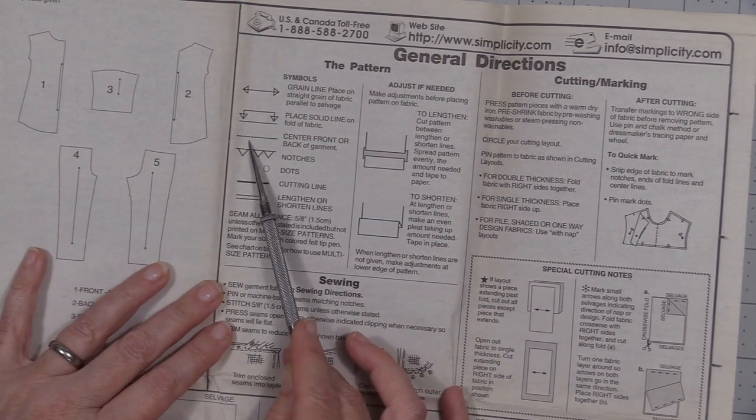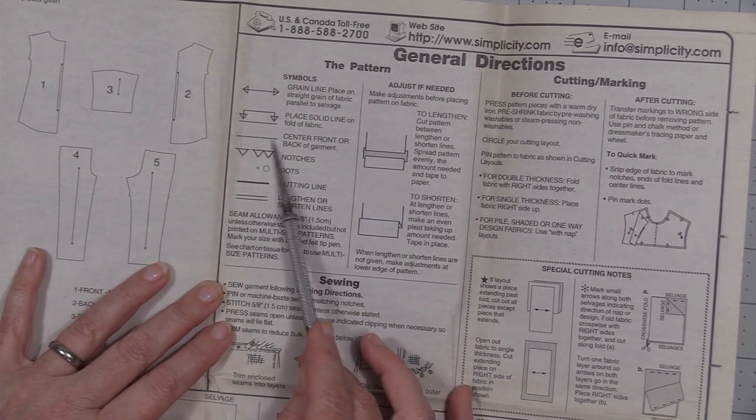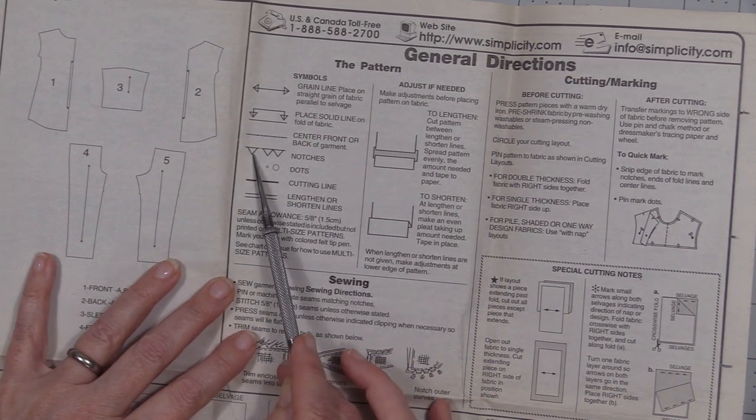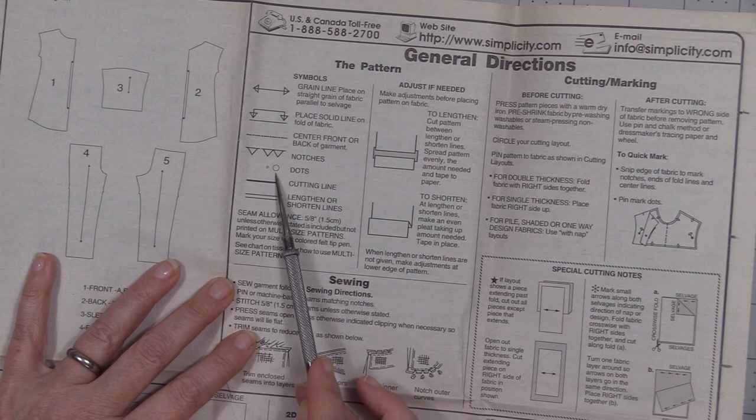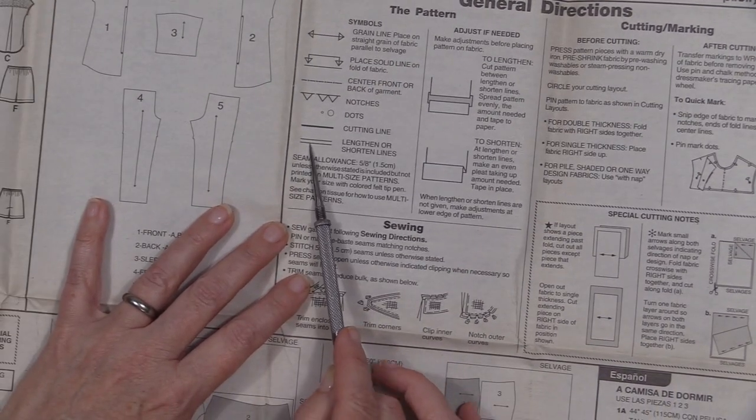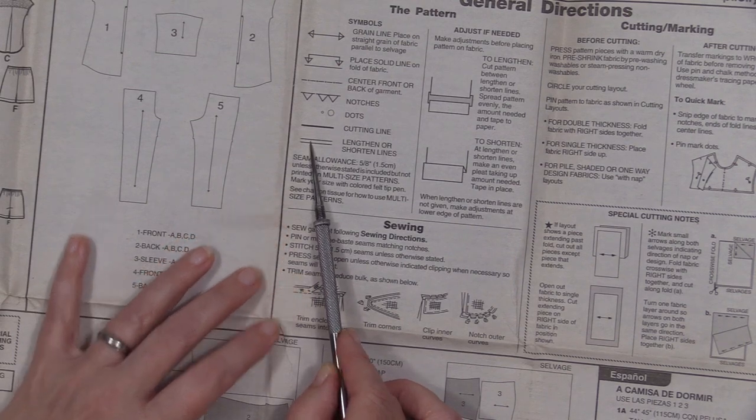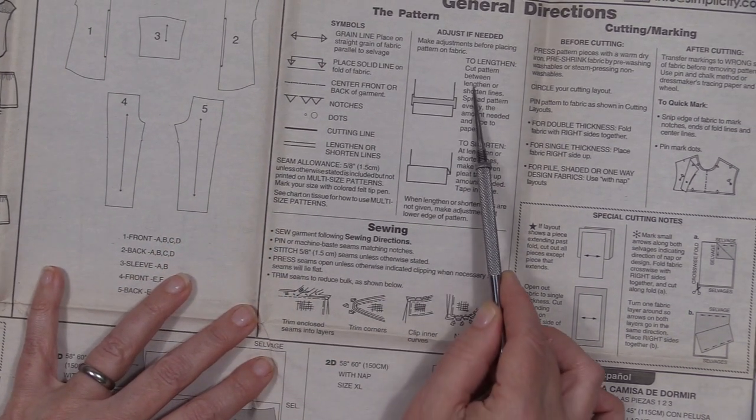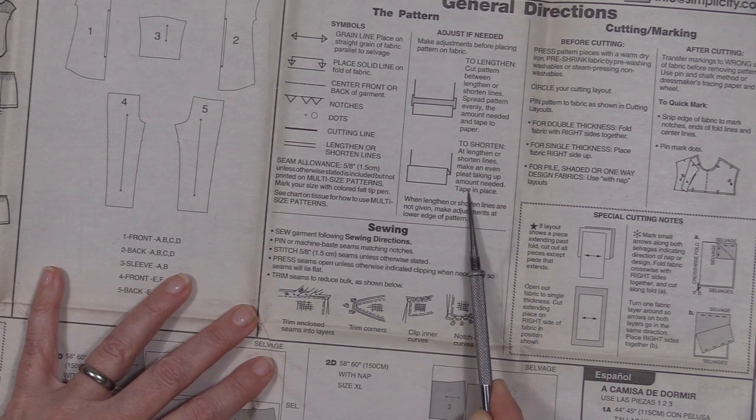This little dashed line with the dots is the front, the center front or the back of the garment. These are notches, dots, cutting line. This double line we're going to be interested in that for the shorts because this is where we lengthen or shorten, this is the information that we need in order to lengthen or shorten.